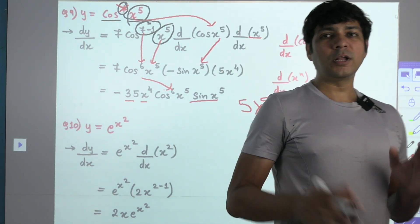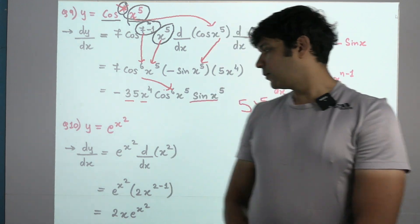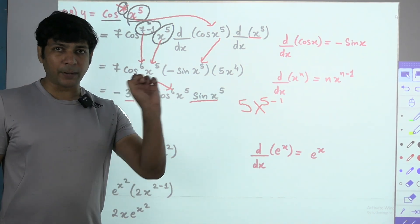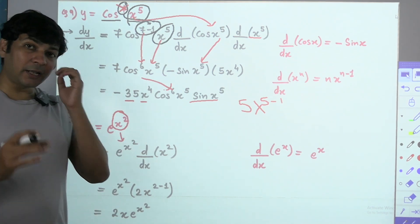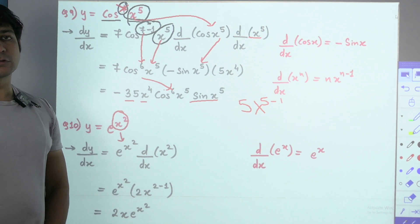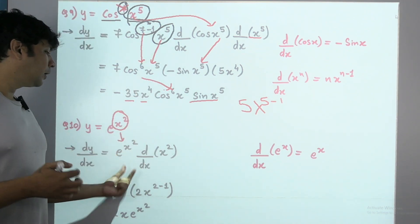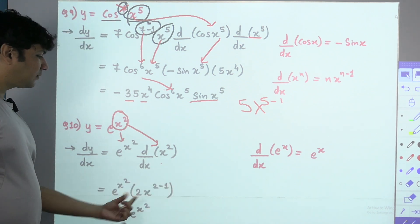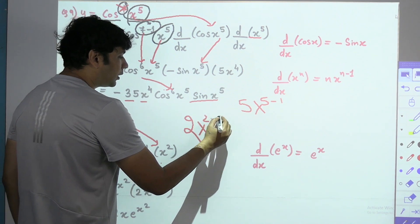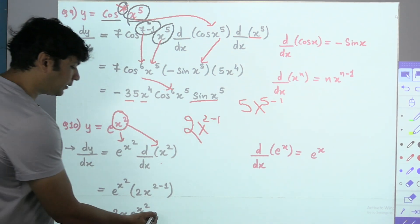Tenth problem — exponential: y = e^(x²). In differentiation and integration, the only formula that remains the same is e^x. Whenever you have an exponential with a weird power, write the question as is — e^(x²) — then differentiate the power separately. Differentiation of x² is 2x. So the answer is 2x · e^(x²). Write number first, then algebra, then exponential.